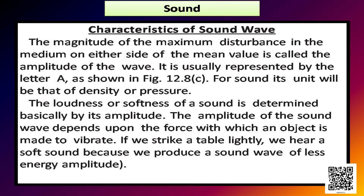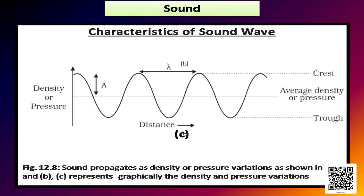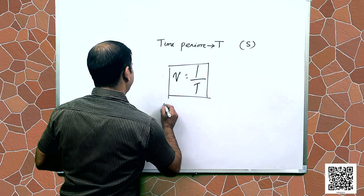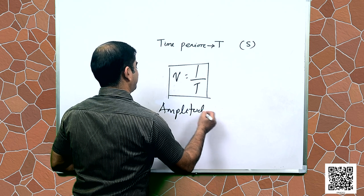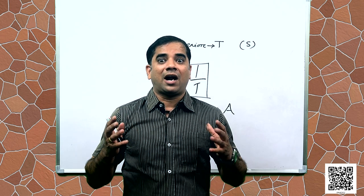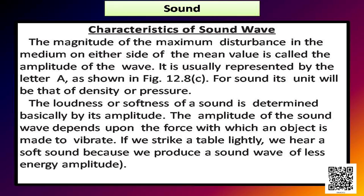The magnitude of the maximum disturbance in the medium on either side of the mean value is called the amplitude of the wave. It is usually represented by the letter A as shown in figure 12.8c. For sound, its unit will be that of density or pressure. The loudness or softness of a sound is determined basically by its amplitude.